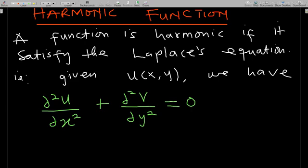The function can depend on three variables, such as u(x, y, z), but in our study of complex analysis we are going to stick to just x and y. So we have the function u(x, y), and if the second partial derivative of u with respect to x, plus the second partial derivative of u with respect to y, is equal to zero, then the function is harmonic.